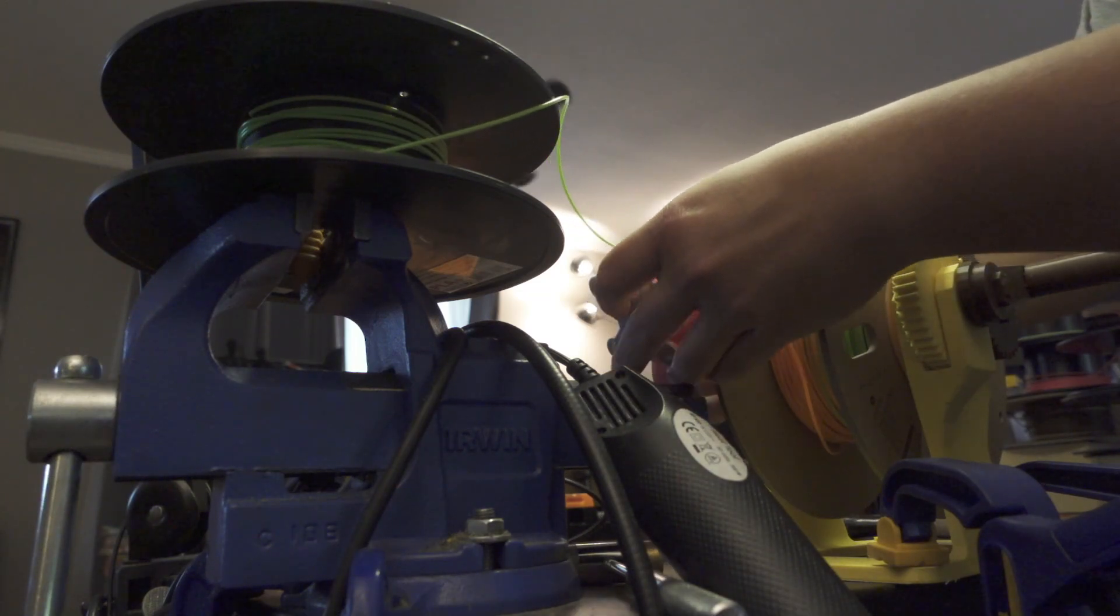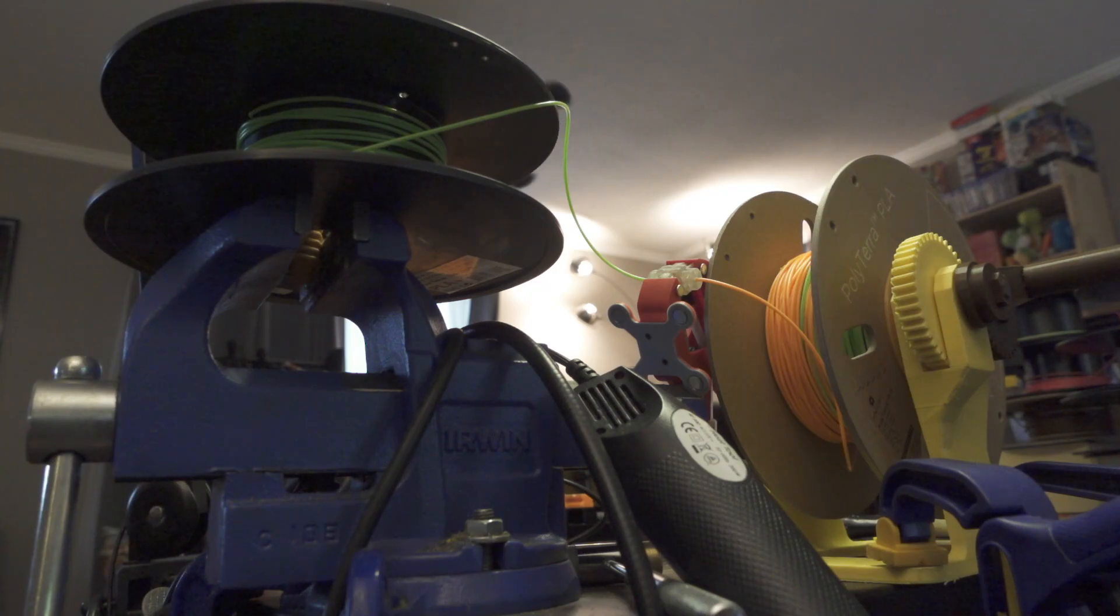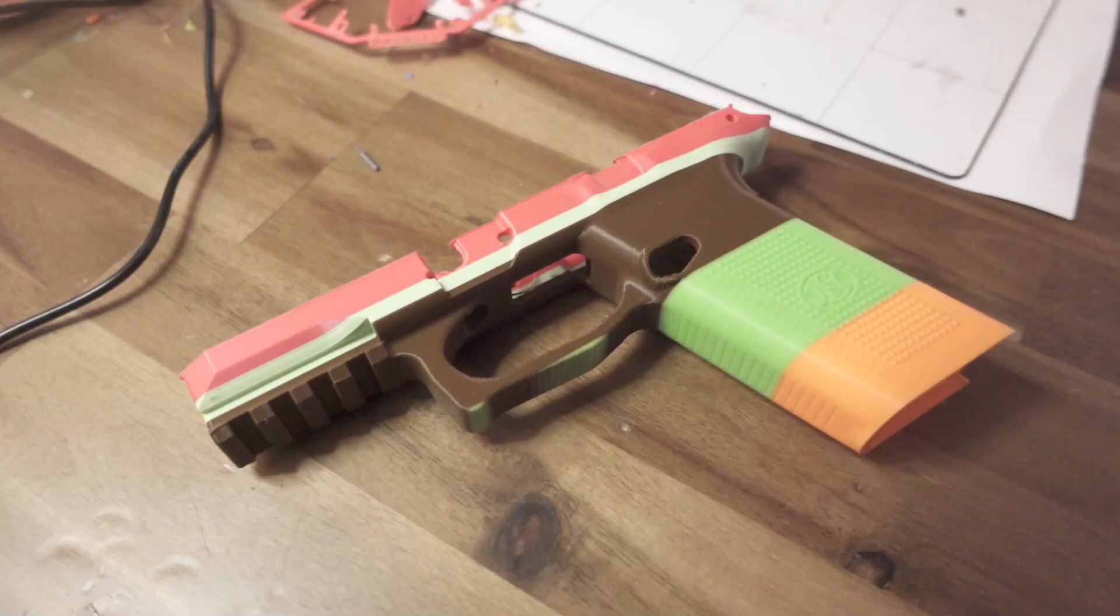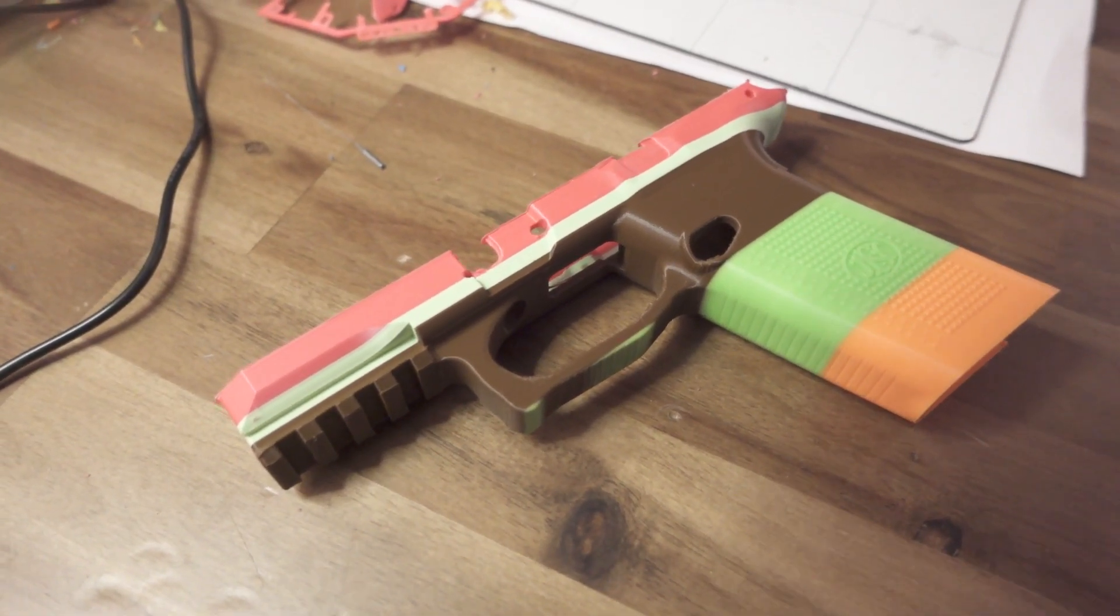And while you're letting it heat up, you want to take the two ends of the filament spools you want to splice together, and cut them flush with the included flush cutters.